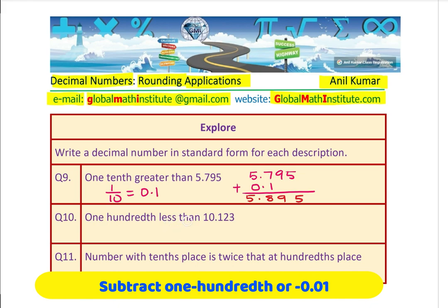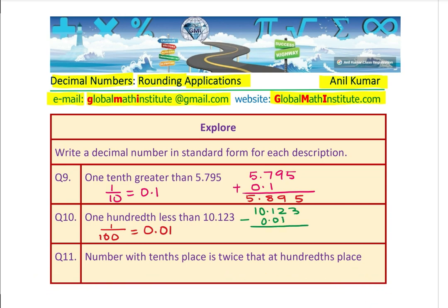The next one is one hundredth less than the given number. One hundredth means one over a hundred. When you divide by hundred, the decimal moves — that is zero point zero one. Less than this number means we have the number ten point one two three, and we take away zero point zero one to get our answer. When you subtract, we get the solution.